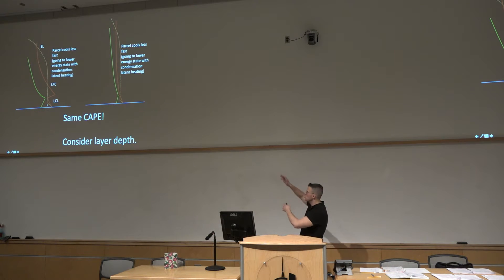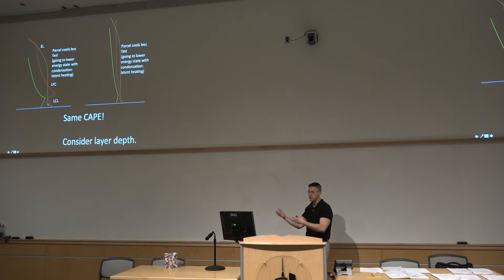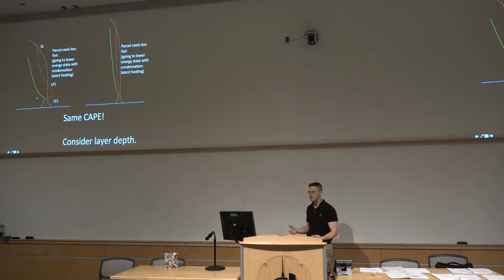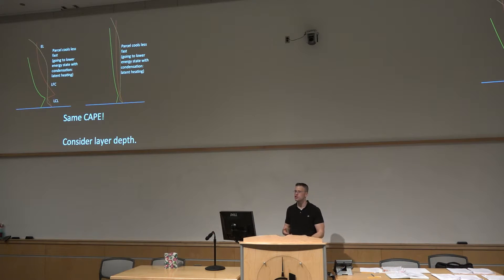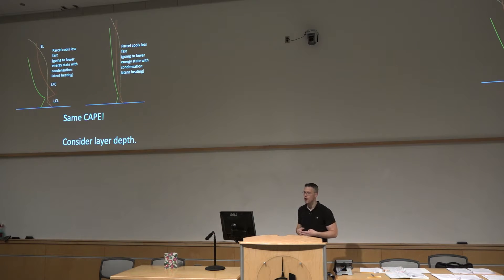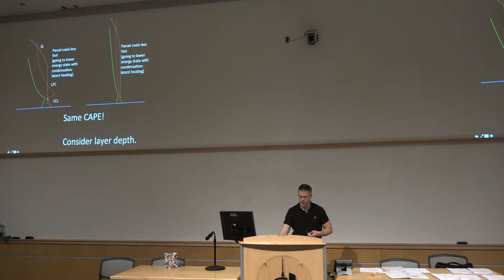We follow a dry adiabat — just imagine it superimposed on these diagrams — up to the lifting condensation level, where we assume saturation takes place through the processes mentioned earlier. Subsequently, condensation occurs, so we're not cooling off at the same rate as the dry adiabatic lapse rate. Now we have condensation occurring — going from vapor to liquid water — which is associated with latent heating, releasing heat to the surroundings. So we cool off at a slower rate, following a pseudo-adiabat upwards from the lifting condensation level throughout the remainder of the profile.